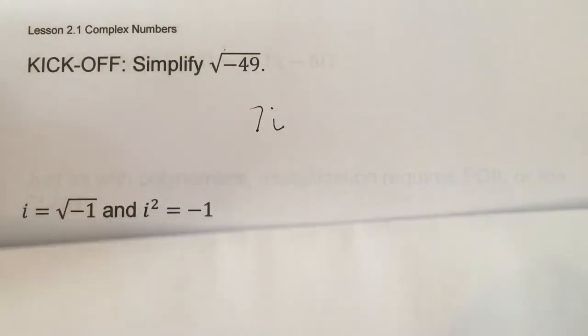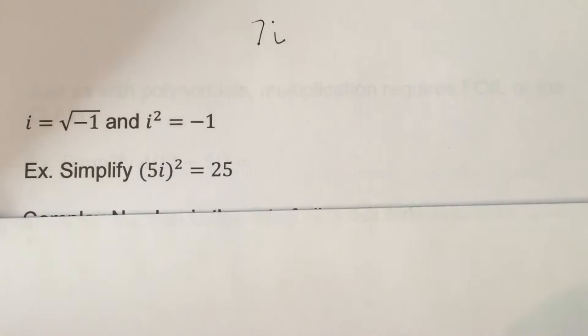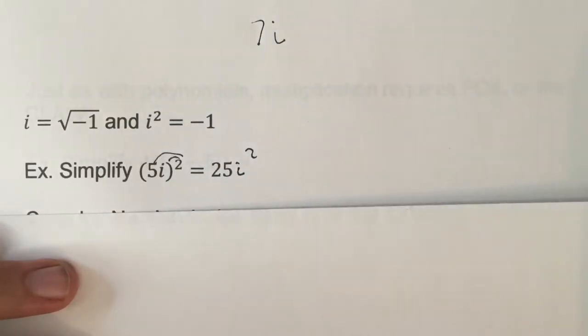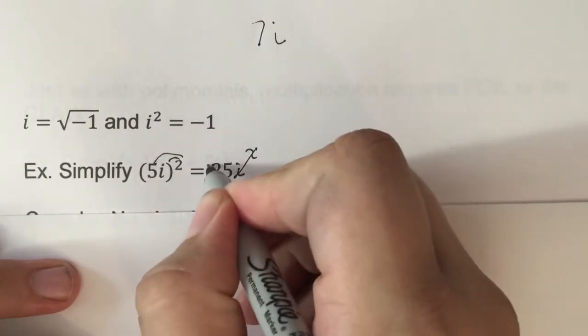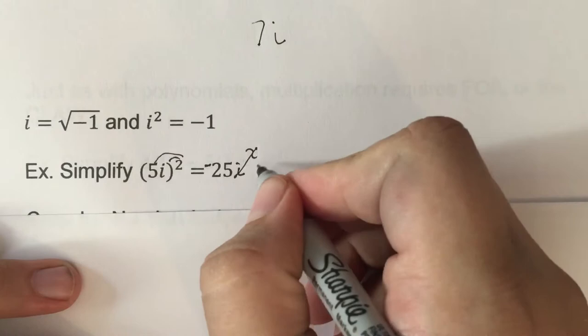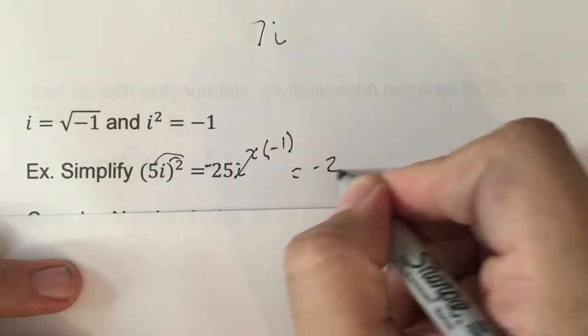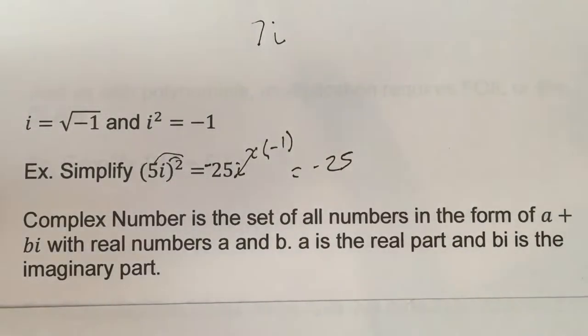So 7i is the result because i represents the square root of negative one, and i squared equals negative one. So if we simplify negative 25, we have to distribute that negative one — it's not just going to go to 25, it's going to be 25i squared. Since i squared is negative one, we cross that out and it changes the sign, making it negative 25.